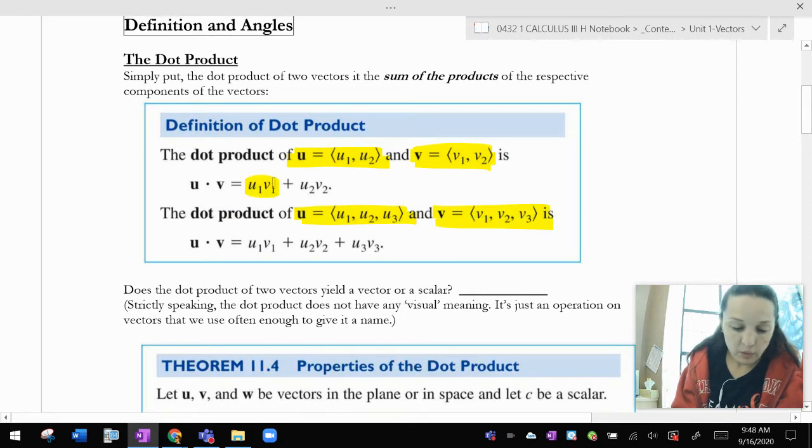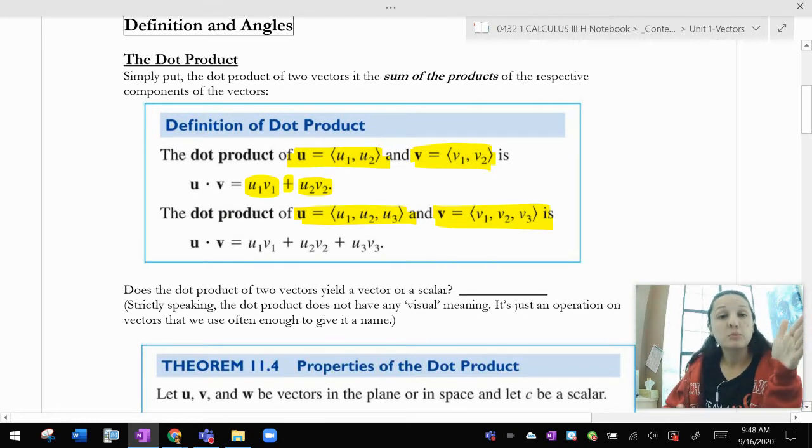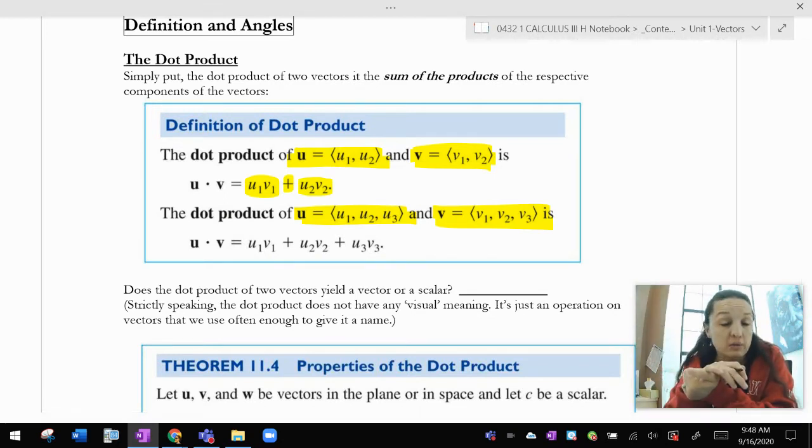It's just u1 v1 plus u2 v2. You multiply the first component times the first component, second times the second, and add them together. That's it.